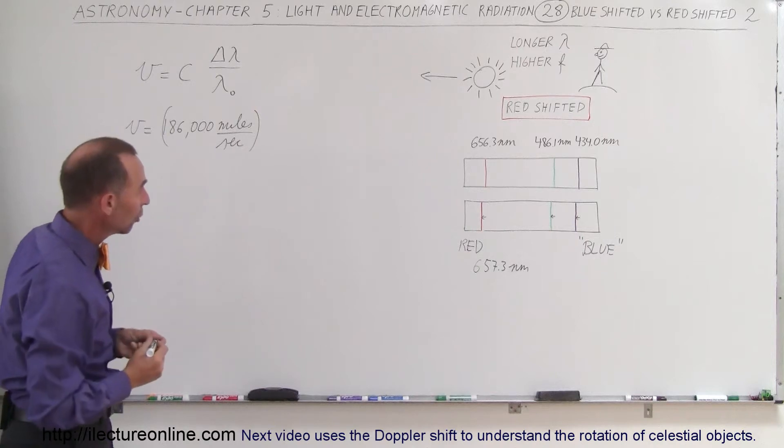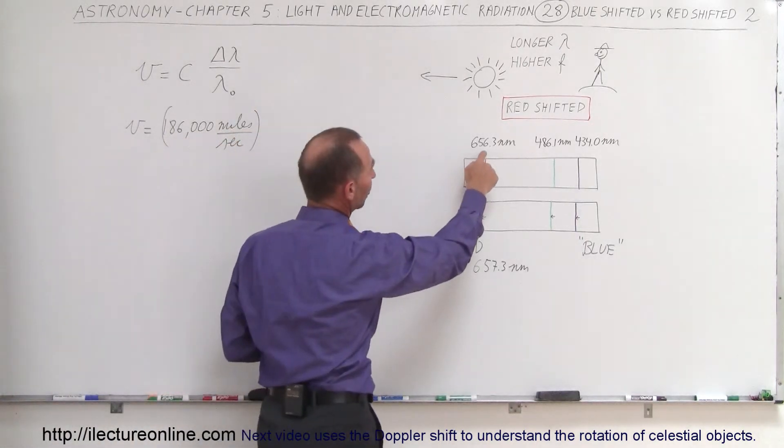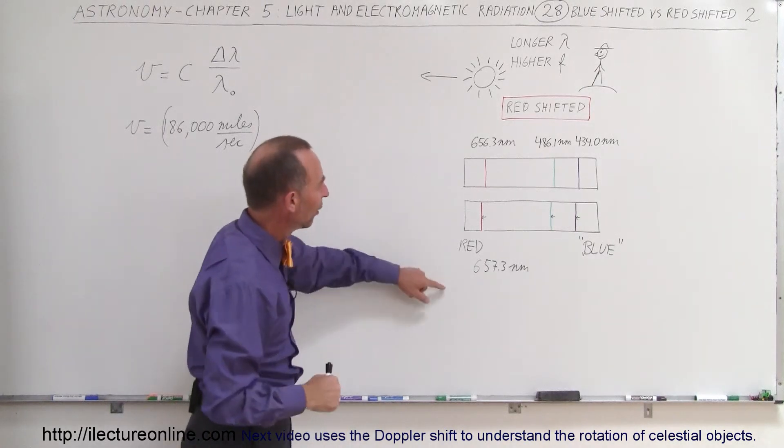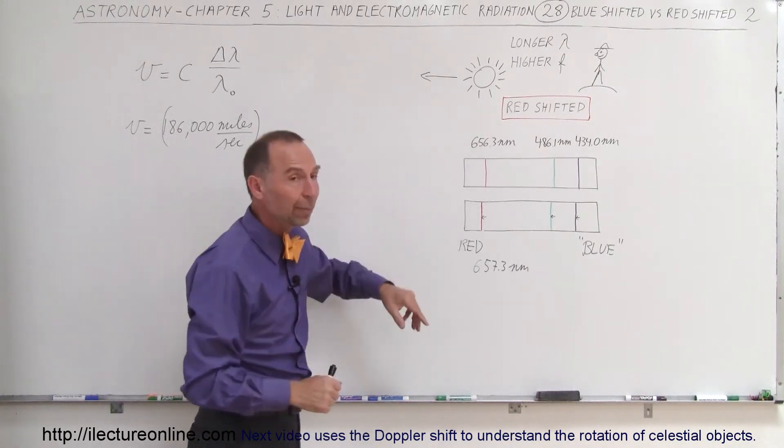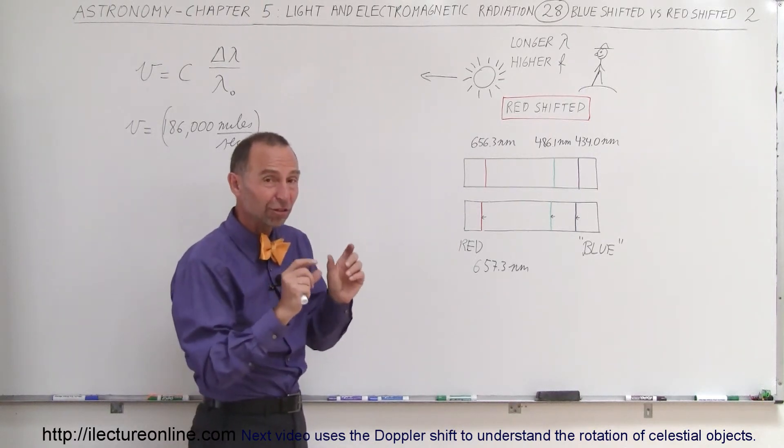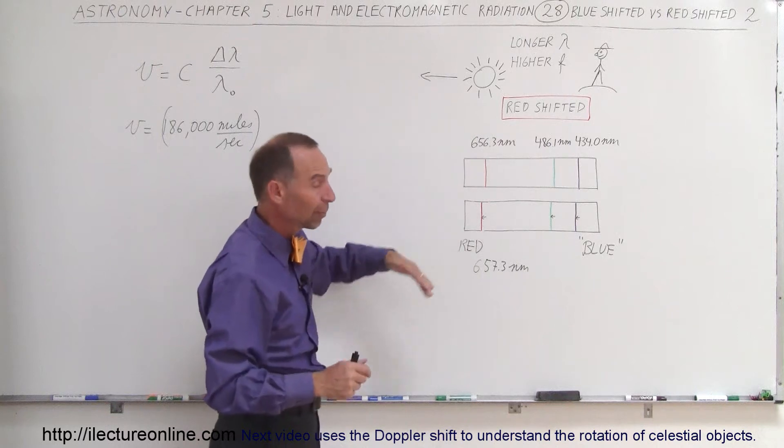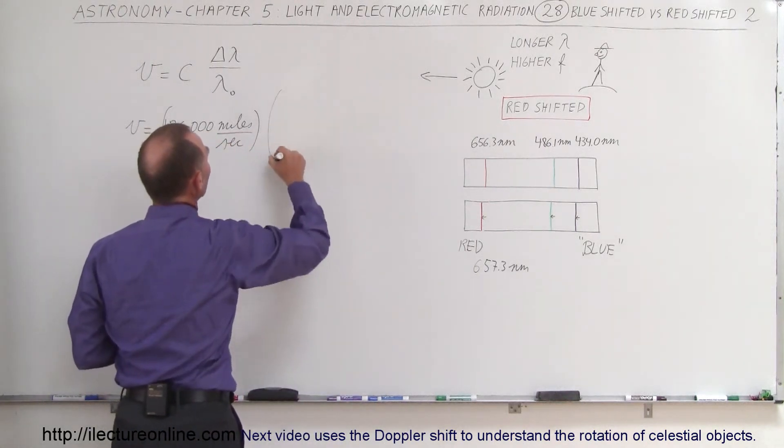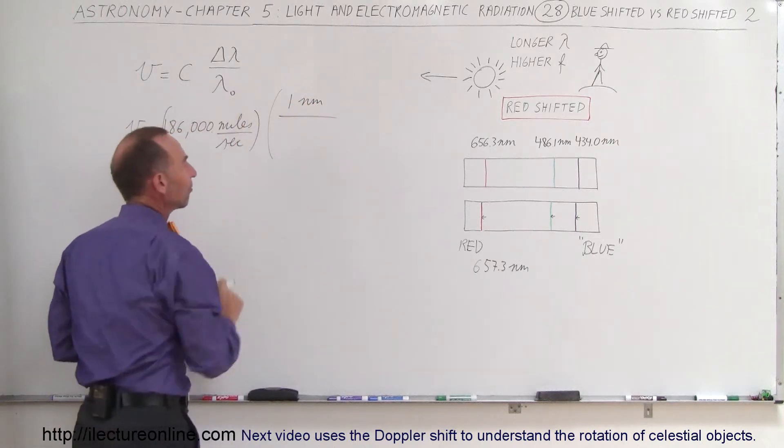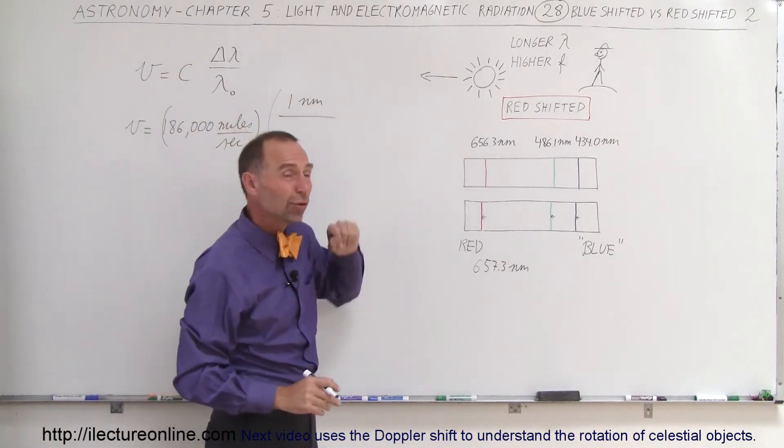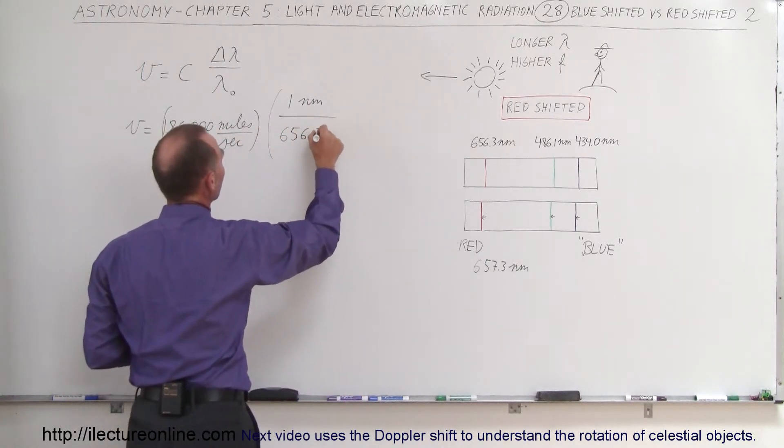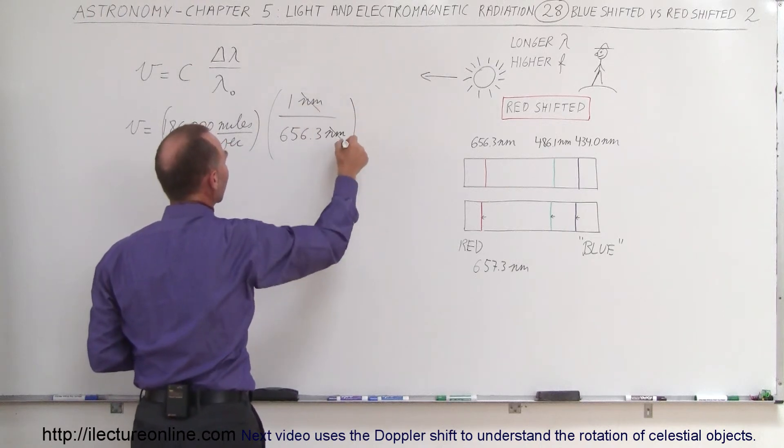How about the shift in the wavelength? Notice it went from 656.3 to 657.3. I picked, of course, nice numbers that are easy to work with. So that looks like a shift of one nanometer. It doesn't matter if it's blue shifted or red shifted—we just put in the number, as long as the shift isn't very large compared to the numbers here we can use the equation. So the shift is one nanometer, and the original wavelength—that's the wavelength it would be if it wasn't moving—we use 656.3 nanometers.